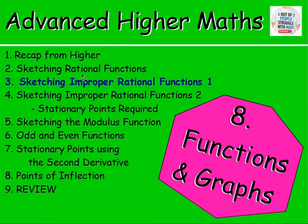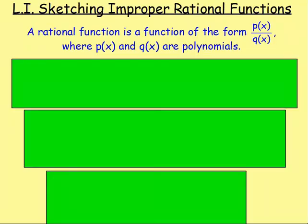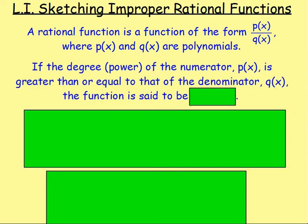With the last lesson we were sketching rational functions. A rational function is a function of the form P of X over Q of X, where P of X and Q of X are polynomials. However, if you look at the highest power of X — in other words, if you look at the degree of the numerator — and you see it is bigger than or equal to the degree of the denominator, then the function is said to be improper.